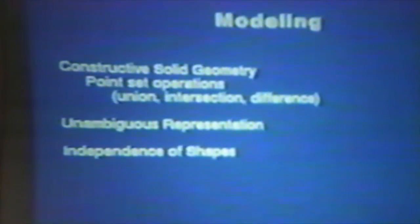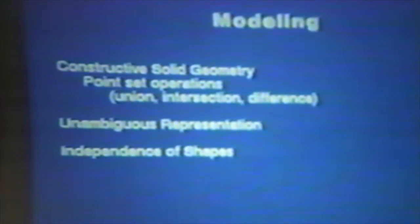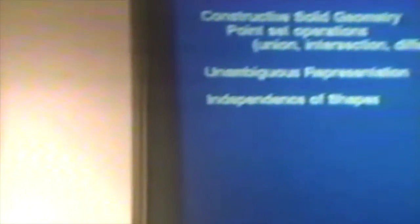One property of constructive solid geometry that the CAD-CAM people really like is that it's unambiguous. As opposed to wireframes, for example — once you've drawn a wireframe drawing of something, you haven't completely specified what it is, because you can interpret a wireframe in more than one way. But once you say it's going to be a sphere and you're going to subtract a cylinder from it, that leaves very little doubt as to what exactly you are talking about.